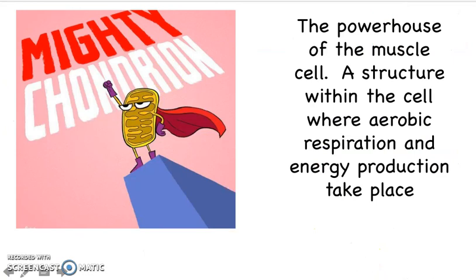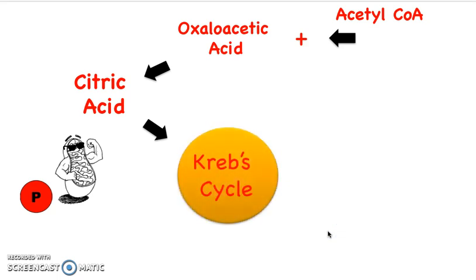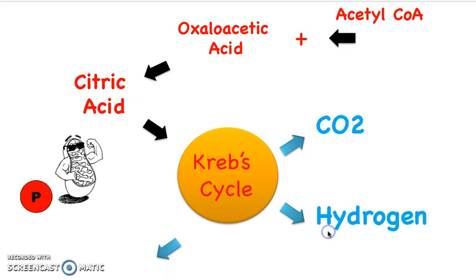We're now accessing the mitochondria, and this is the structure within the cell where aerobic respiration and energy production is going to take place. So we're into stage two, known as the Krebs cycle. You get acetyl CoA from stage one, which combines with oxaloacetic acid to form citric acid, which is then oxidized through a cycle of reactions known as the Krebs cycle. From this, you get four things: the first thing is CO2, one of our byproducts.